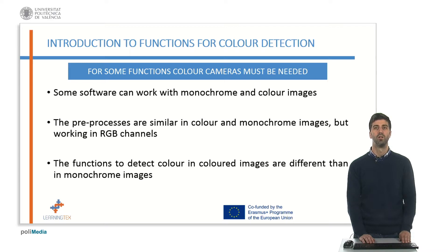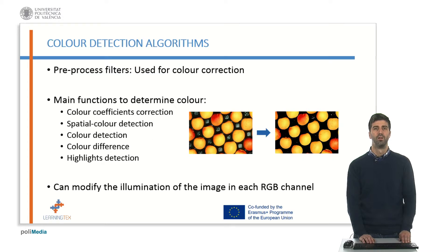The preprocesses in color image are similar to monochrome image, but working in the three RGB channels. The most important preprocess is the color correction filter, and it is almost always used with color correction coefficients algorithms, which improve the image illumination. Both operations working together let us improve the illumination of the image in each RGB channel.